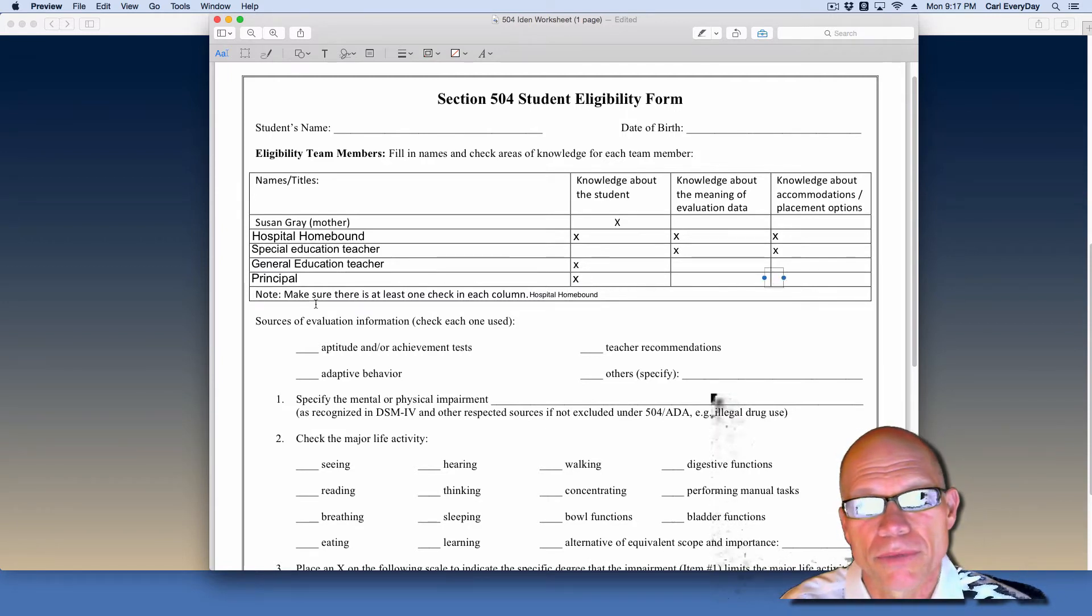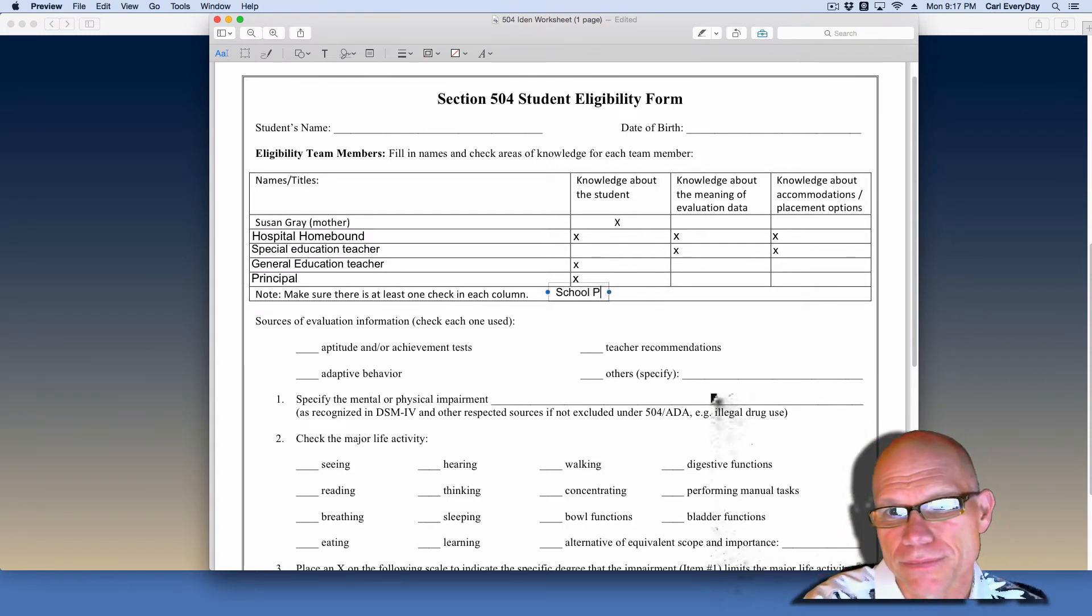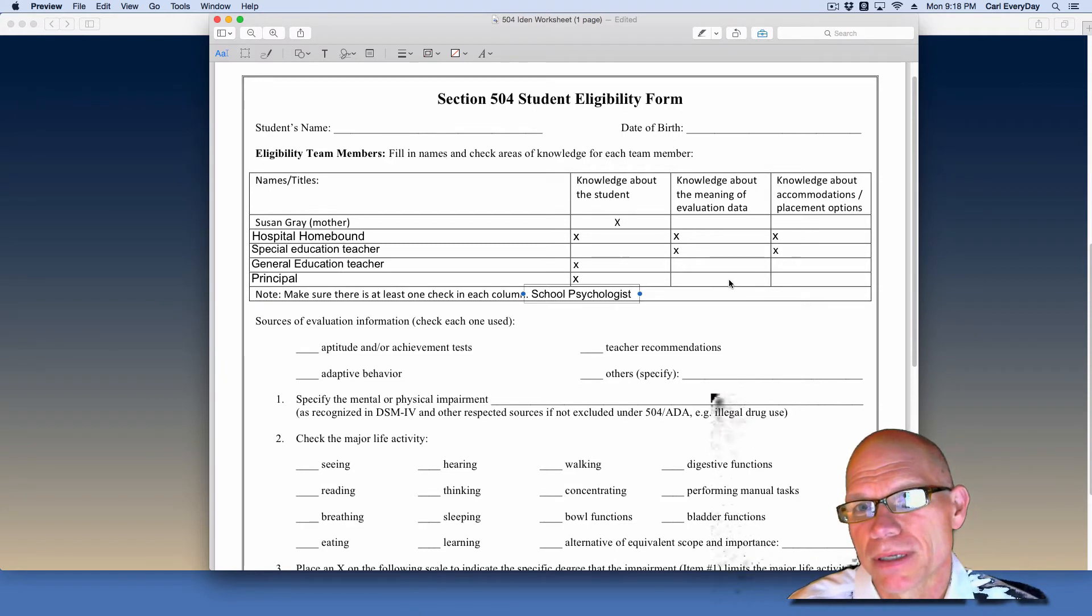And then we're going to bring in one extra person that's not already listed here. We're going to bring in a school psychologist because they are likely to have information about accommodations and placement options and also be able to help us with evaluating the data or looking at the data. They'll have some ability to interpret evaluation data for us.